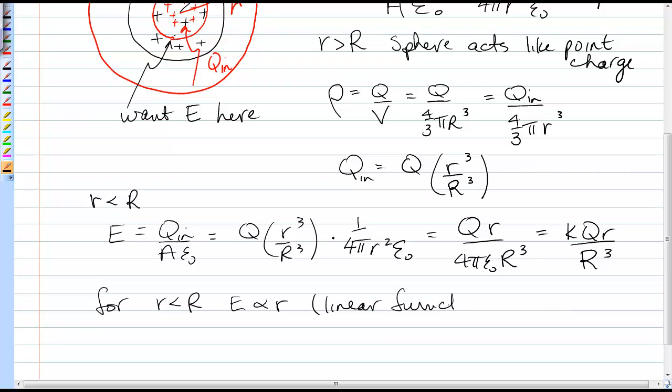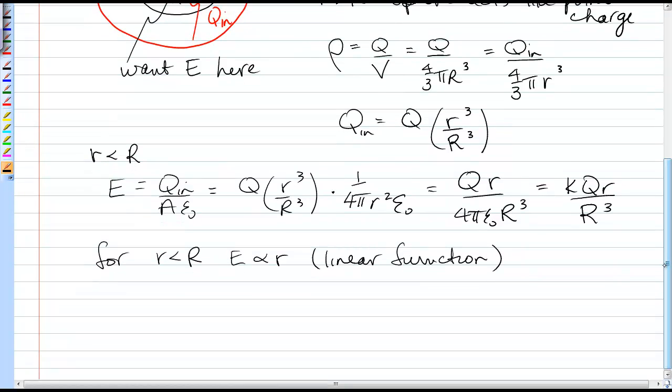Okay, so at the center, it's 0, and it gets bigger linearly as you move towards the edge of the sphere. If we were to graph this quantity, the electric field versus r, the distance from the center of the sphere, and we'll mark the edge of the sphere with radius capital R.